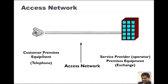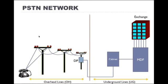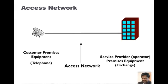The general term for the telephone at the customer's side is Customer Premises Equipment, or CPE. Nowadays, not only the telephone but other devices are also connected to the telephone network — for instance, a computer can be connected via a modem, and the modem can also be called CPE or Customer Premises Equipment.